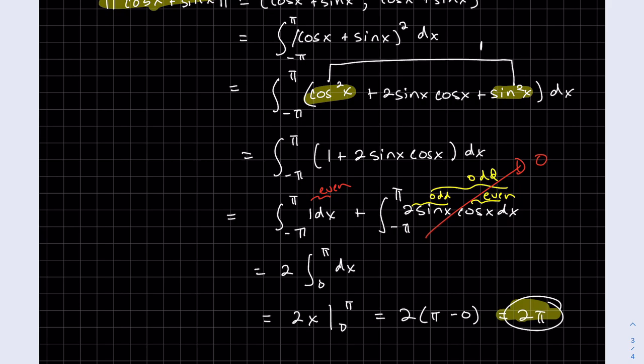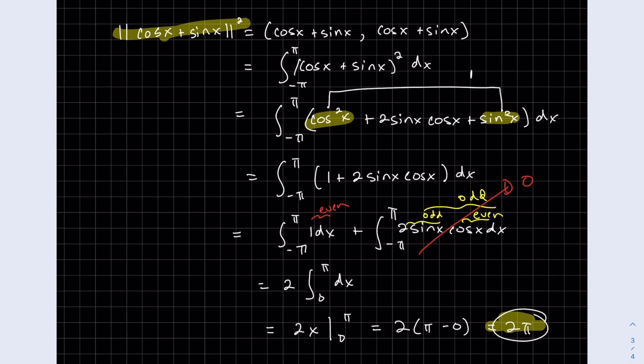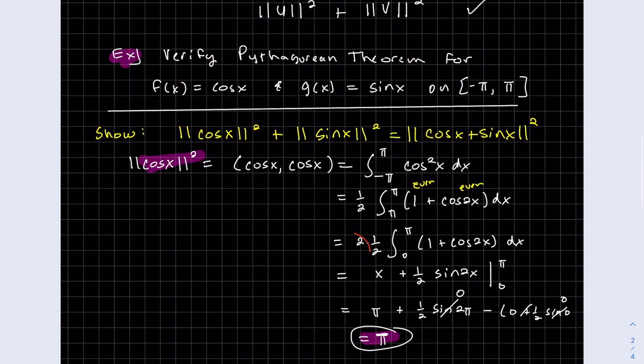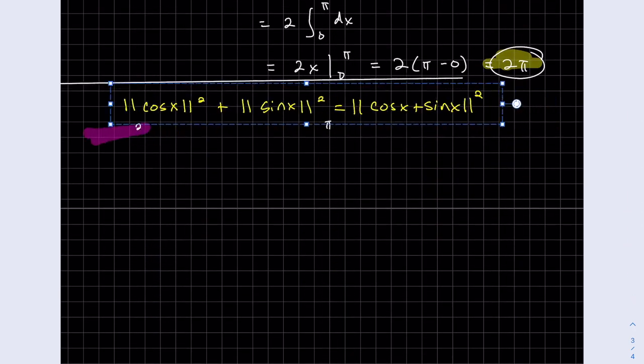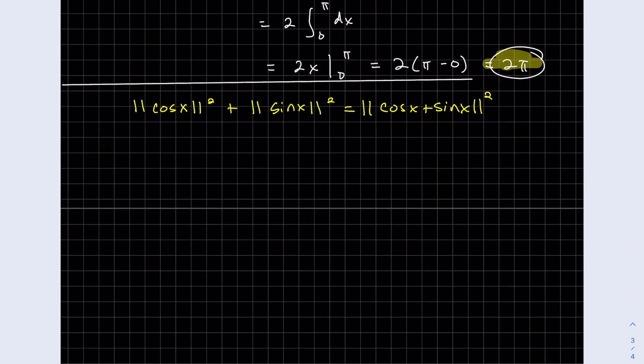Okay, we have all the pieces. So the right-hand side is 2π. And each of these were π. Yep, 2π equals 2π. We verified it. That's it for today.